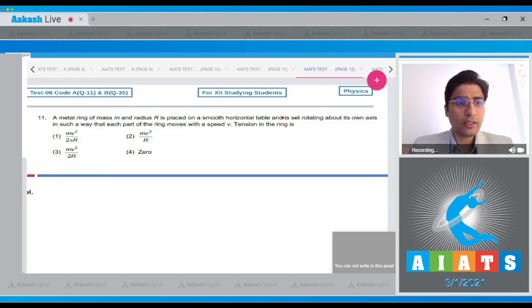Student, let us draw a diagram to understand this question. There is a ring. Now, let us assume a small angular cross section of the ring such that the total angle is 2 theta, so that each half angle will be theta.